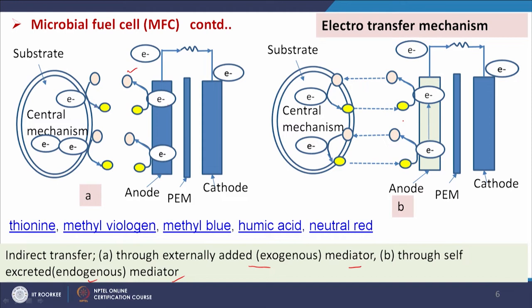That is indirect electron transfer from the bulk of the solution to the anode surface — microbes are not directly transferring the electron. But there are some other methods where the cell directly carries the electron from the bulk of the solution to the anode surface and leaves the electron there.